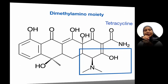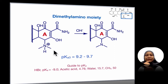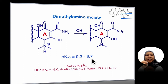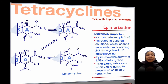The third chemistry of tetracycline involves the alpha ring and the dimethylamino moiety. In the stomach or any acidic medium, this dimethylamino group will pick up a proton and become a positively charged moiety. To remove the proton, the pKa is 9.2 to 9.7, so a base can abstract the proton and form the neutral complex. This dimethylamino moiety is important in terms of epimerization.